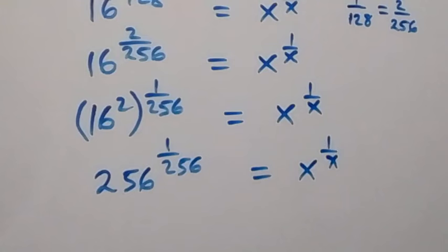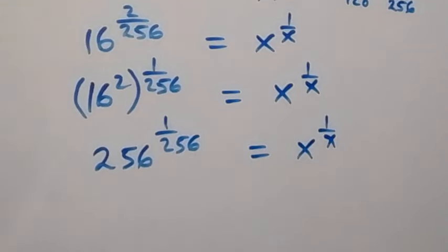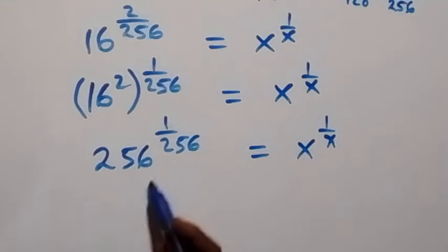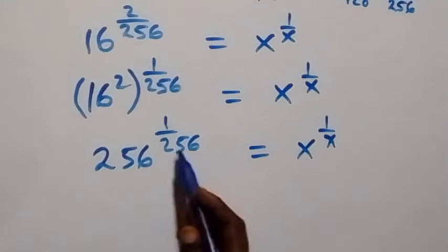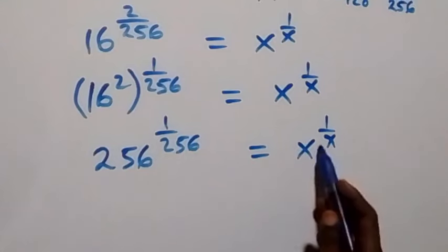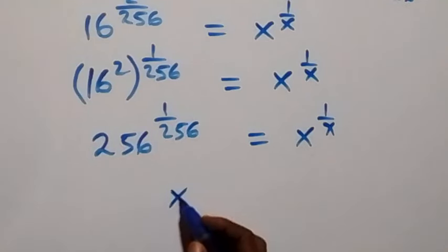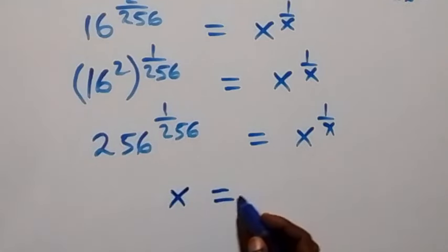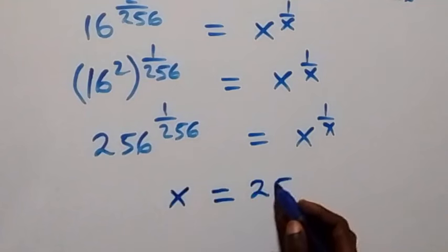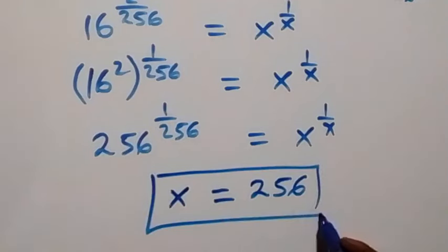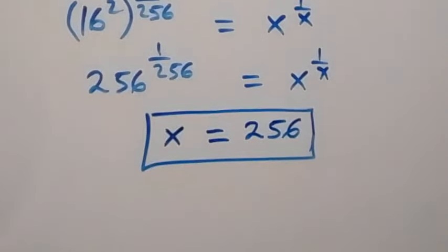When we compare the left-hand side and the right-hand side, we see the base here is the same as the denominator here. The base 256 matches the denominator 256 on the right-hand side as well. Therefore, x equals 256.